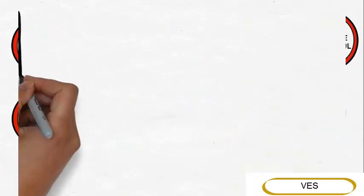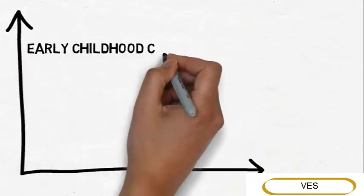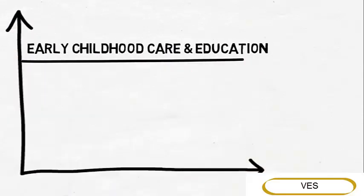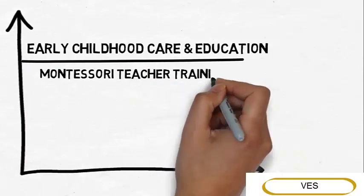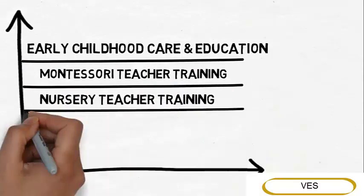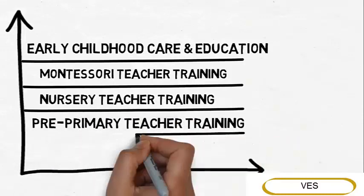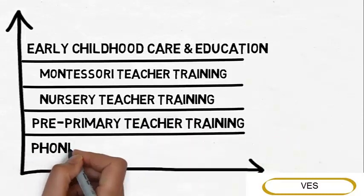VES offers a bouquet of various certified courses. They are Diploma in Early Childhood Care and Education, Diploma in Montessori Teacher Training, Diploma in Nursery Teacher Training, Diploma in Pre-Primary Teacher Training, and a Certificate Program in Phonics Teacher Training.